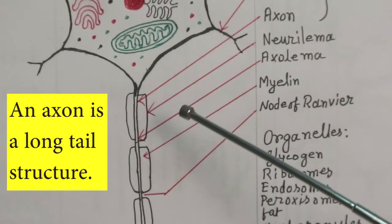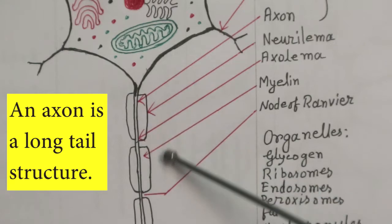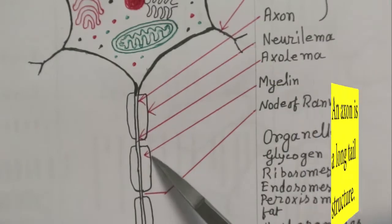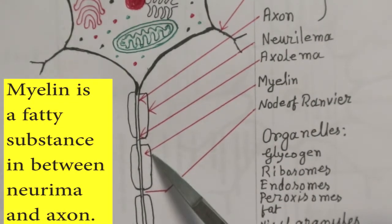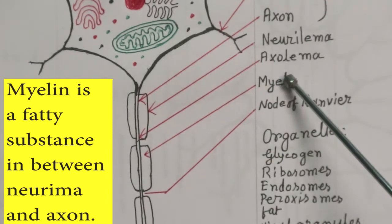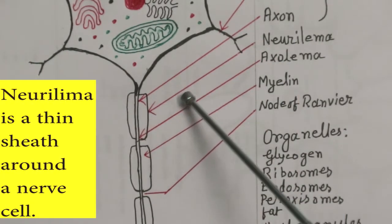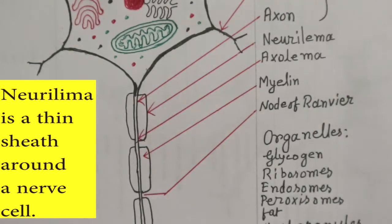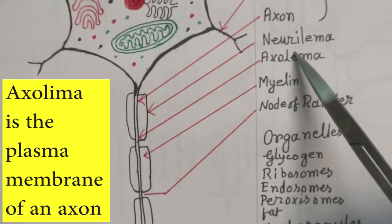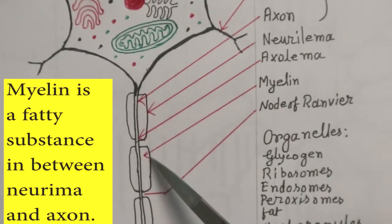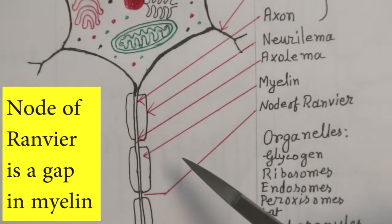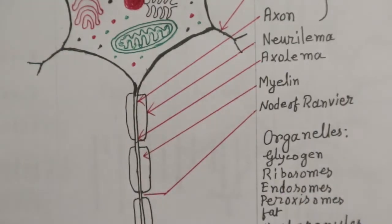An axon is a long tail-like structure which carries signals or impulses away from the cell body. Many axons are insulated with a fatty substance called myelin, which helps axons conduct electrical signals. The neurilemma is the thin sheath around the nerve cell. The axolemma is the plasma membrane of an axon. Myelin is a fatty substance between the neurilemma and the axon, and it is not continuous — the gaps are known as nodes of Ranvier.